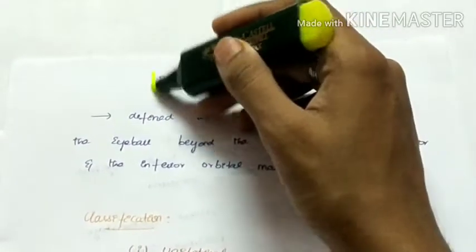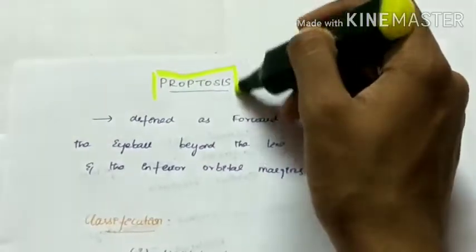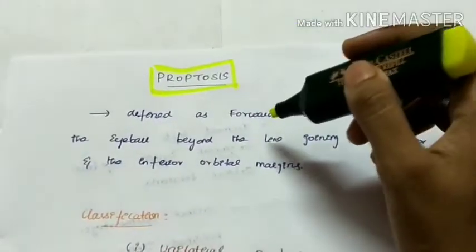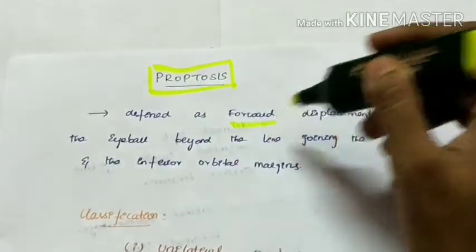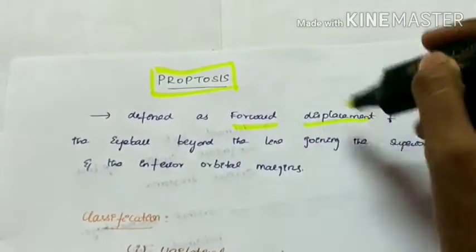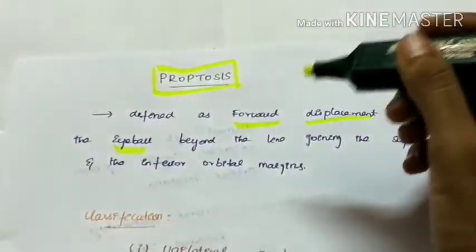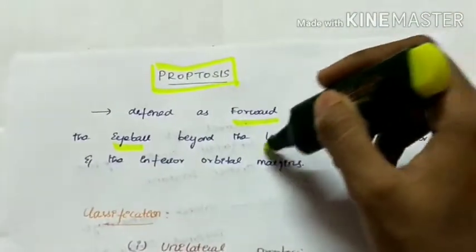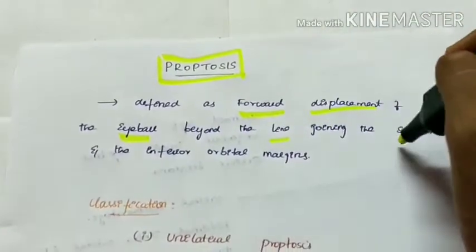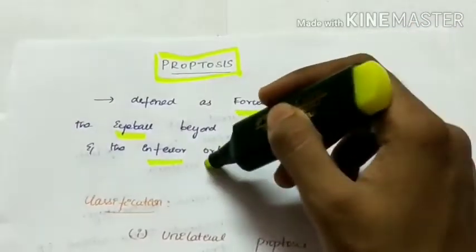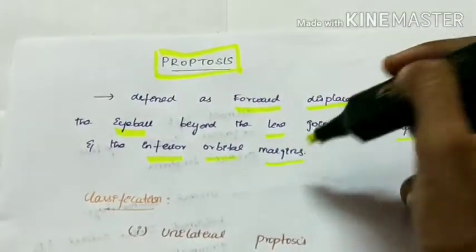Proptosis is defined as forward displacement of the eyeball beyond the line joining the superior and the inferior orbital margins.